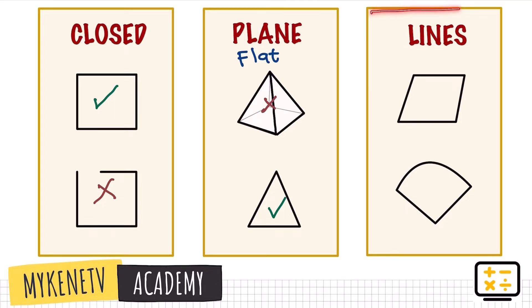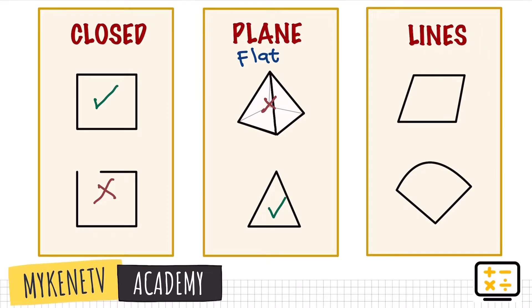How about the third part? Our definition states that polygons are made up of line segments, so the lines should be straight. This shape is not a polygon because it has a curved surface. But this one is made up of straight lines, so therefore this is a polygon. Remember: a polygon is closed, it's flat or a plane figure, and it's made out of straight lines.